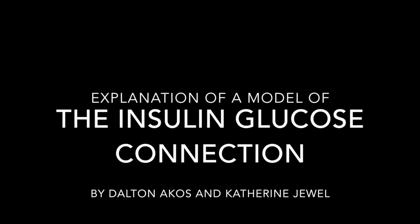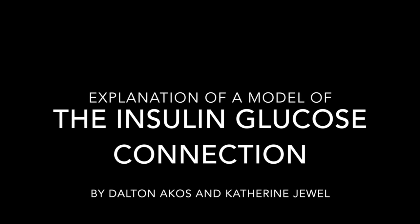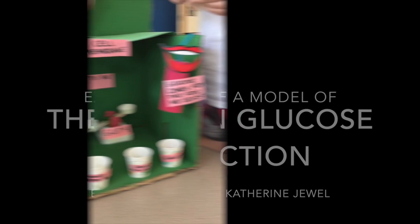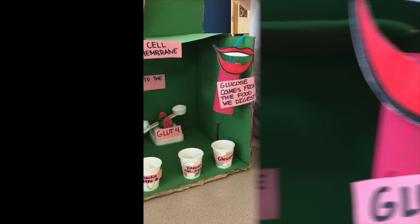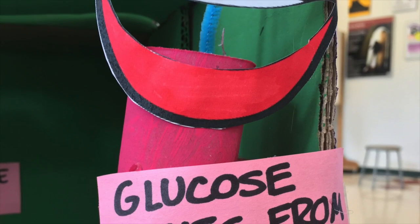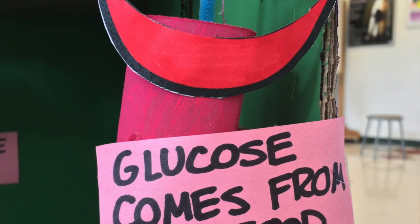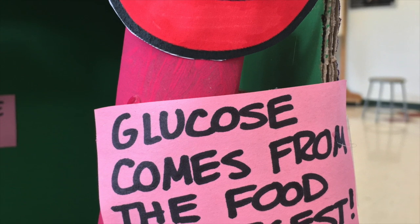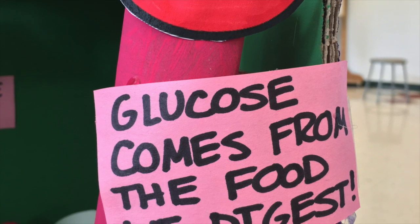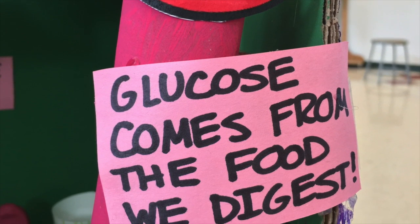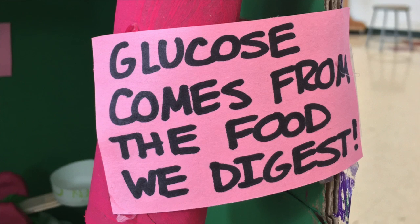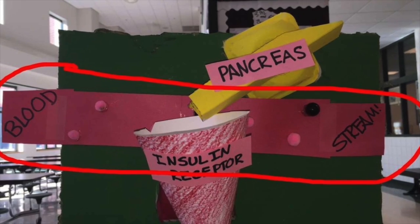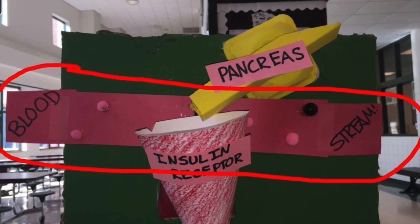How Glucose is Moved into Your Cells, by Dalton Akos and Catherine Jewell. You eat food that contains sugar, which begins to be broken down into glucose molecules by enzymes in your saliva. This breaking down process continues in your stomach and is called digestion.